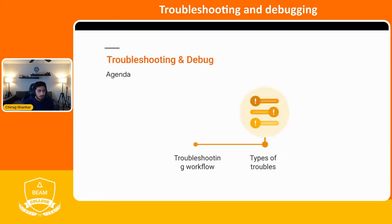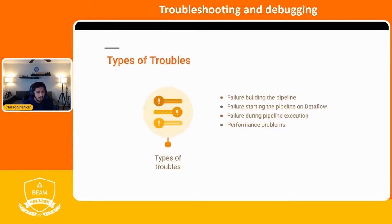Now let's talk about the different types of troubles we might encounter. There are four main types: failure building the pipeline, failure starting the pipeline on Dataflow, failure during pipeline execution, and performance problems.